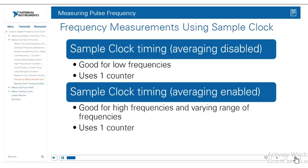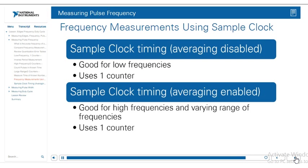In the previous examples, we used the DAQmx Timing set to implicit. However, we can also choose sample clock timing for frequency and period measurements. Some devices can return an average measurement of all periods since the previous sample clock pulse, instead of only measuring the period immediately preceding the current sample clock pulse. To do this, you use a property called enable averaging — it's a DAQmx channel property node associated with those measurement types. A good reason to enable this property is when you have high frequencies and a varying range of frequencies.